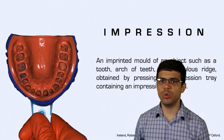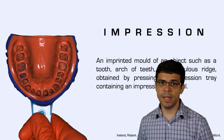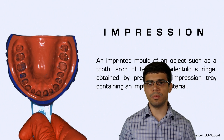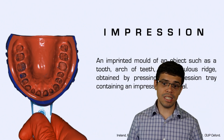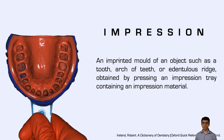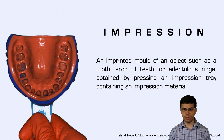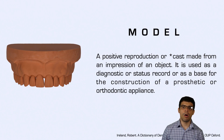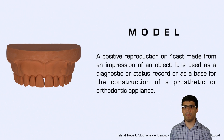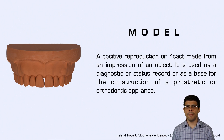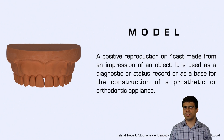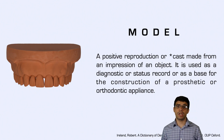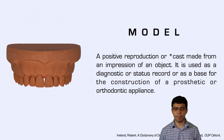He was the first one to define the term impression in dentistry. A definition of impression is an imprinted mold of an object such as a tooth, arch of teeth, or dentulous ridge, obtained by pressing the impression tray containing an impression material. He also defined what is a model — a positive reproduction, or cast, made from an impression of an object. It's used for diagnostics, status record, or as a base for the construction of prosthetic or orthodontic appliances.